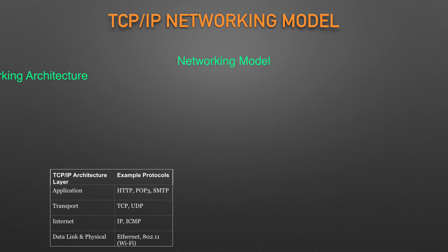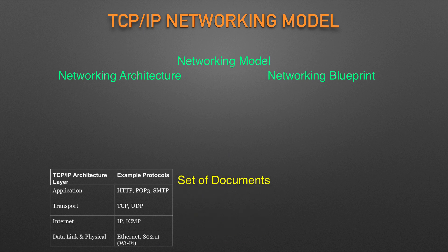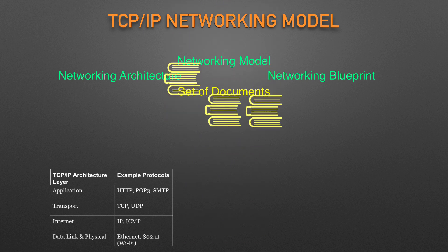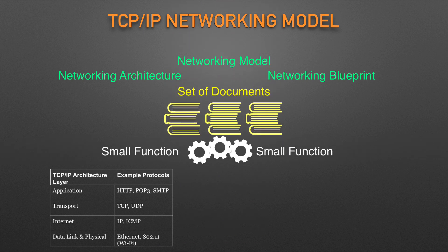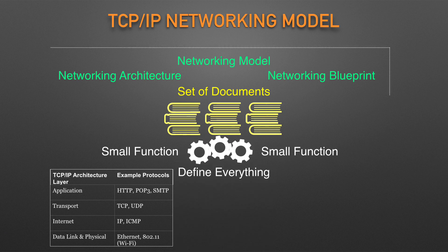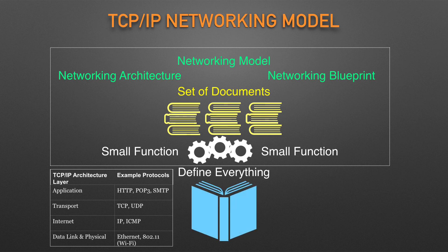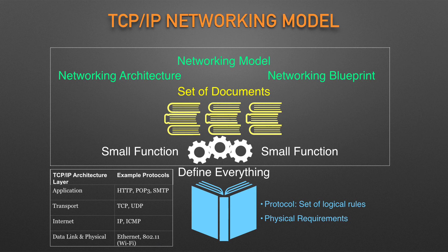A networking model, sometimes also called either a networking architecture or networking blueprint, refers to a comprehensive set of documents. Individually, each document describes one small function required for a network. Collectively, these documents define everything that should happen for a computer network to work. Some documents define a protocol, which is a set of logical rules that devices must follow to communicate. Other documents define some physical requirements for networking, such as the voltage and current levels used on a particular cable when transmitting data.